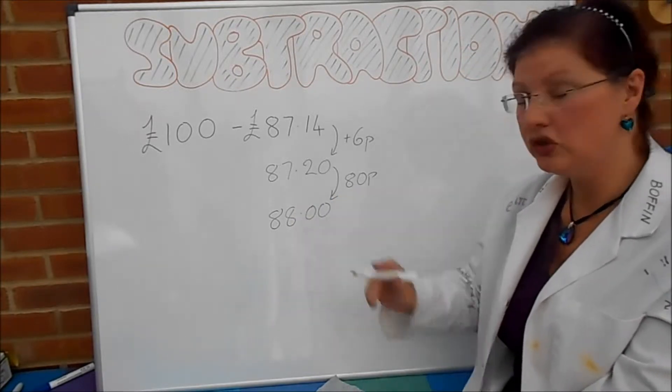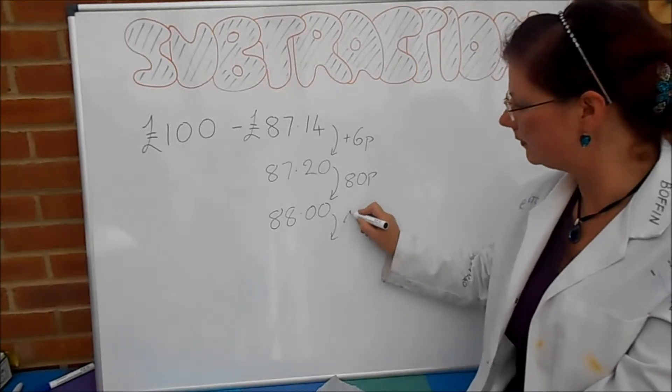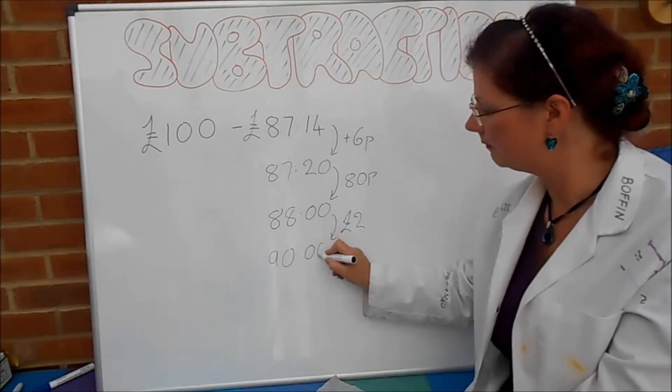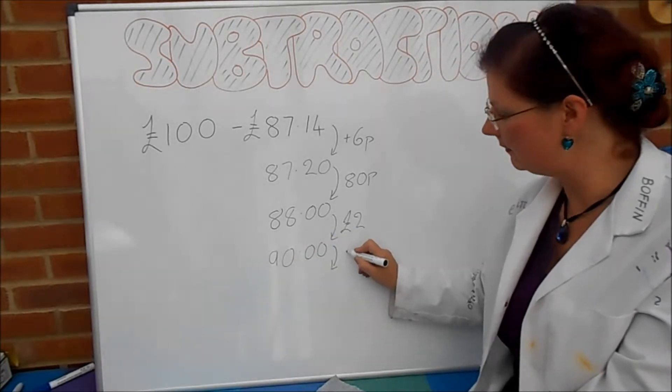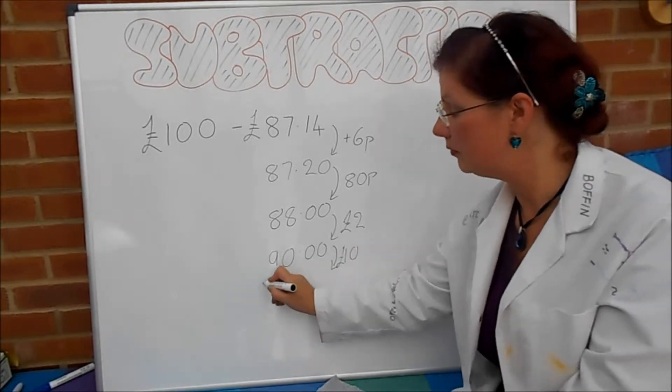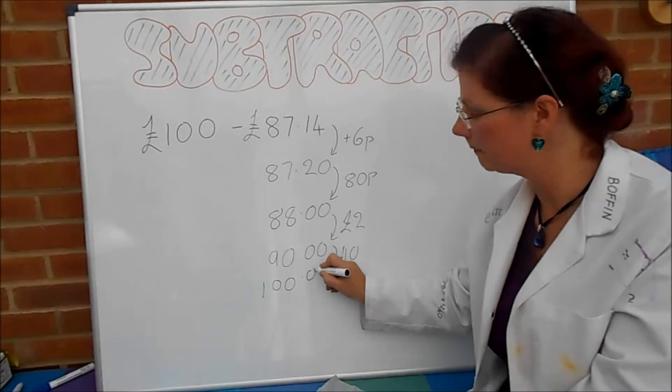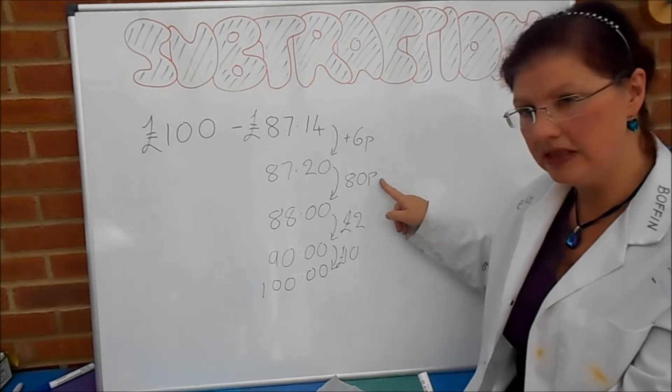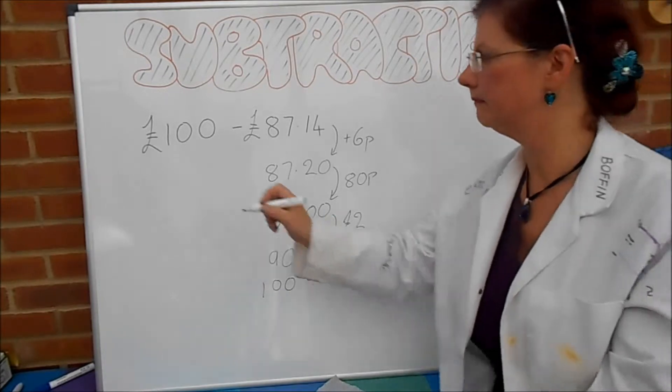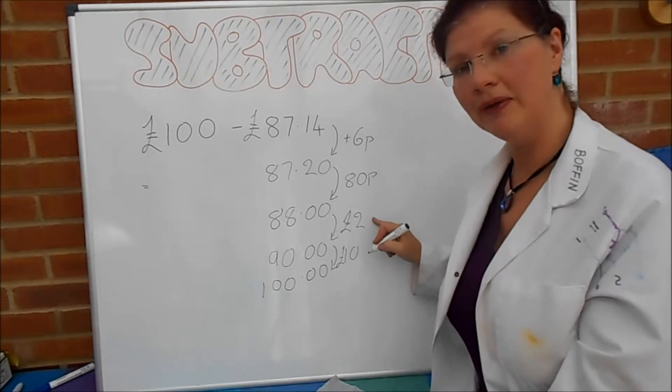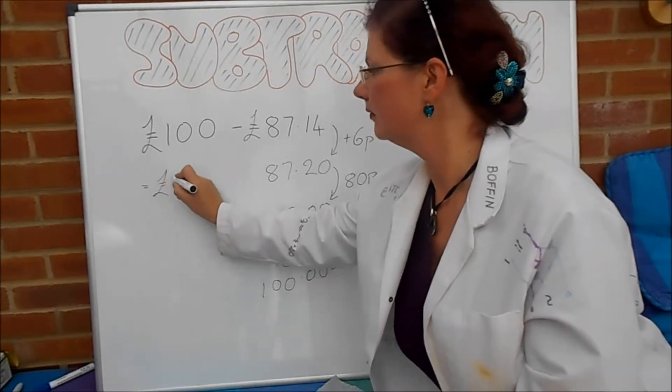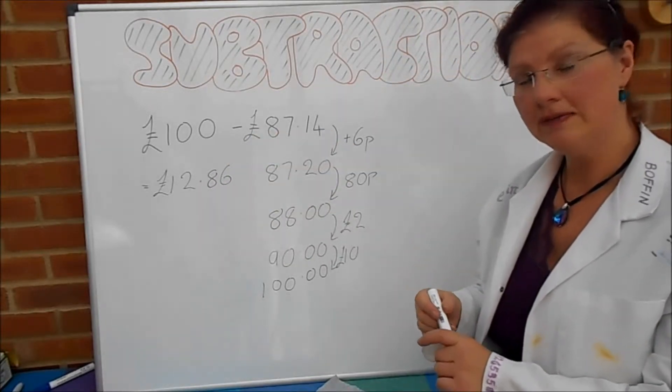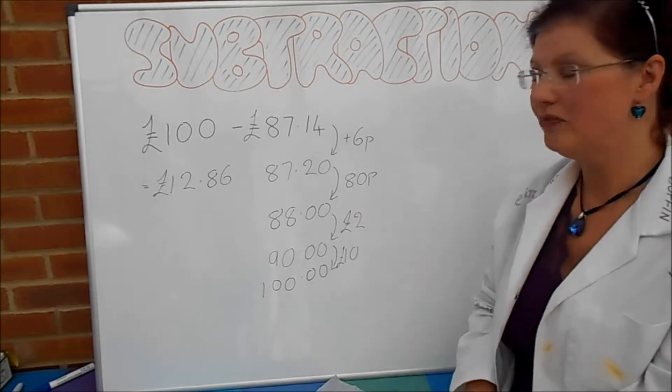Now, I'm going to add on another £2, and that will bring me up to £90. And then it's very easy from there. £10 extra brings me up to £100. So, that means that the change given, all in all, is £10 plus £2 plus 80p plus 6p. Or, in other words, £12.86. So, £87.14, the change is £12.86.